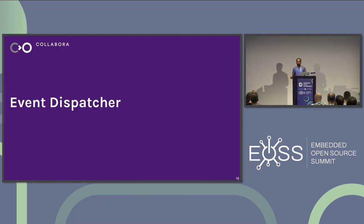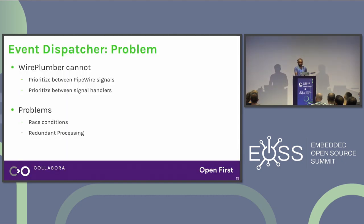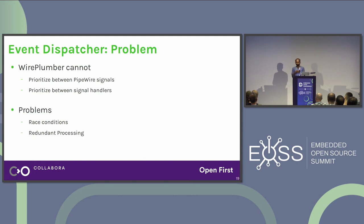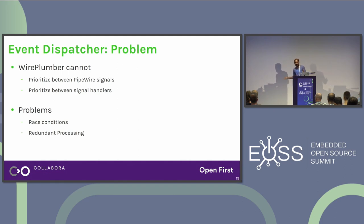The next thing is the event dispatcher — another key piece of technology for the 0.5 release. The problem: WirePlumber cannot prioritize between PipeWire signals. Say a Bluetooth device is connected — a 'device added' signal is sent to WirePlumber. At the same time, some node property has changed. A node property change is insignificant, but device addition is an important event. WirePlumber should give more priority to the device change event and process it first so the device shows up in the GUI.